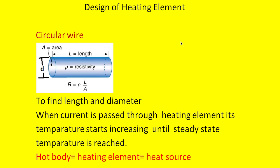There are two types of heating elements which are popular. One is called the circular wire and the other type is called the rectangular strip. First I will take up the circular wire, whose length is L, whose diameter is D, and whose resistance is capital R. The unknowns here are the diameter and length of the wire — these are the two things we have to find out.